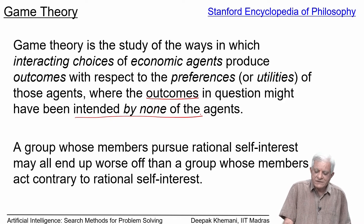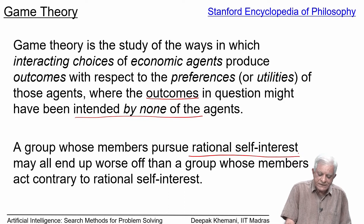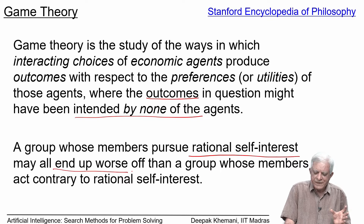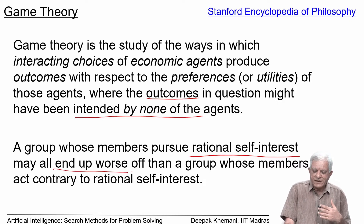A group whose members pursue rational self-interest — and we keep emphasizing that agents have rational self-interest, they have self-interest and they are perfect reasoners — may all end up worse than a group whose members act contrary to rational self-interest. It can be seen in many situations that the outcome of many games is worse than what could have been if there was cooperation. When we say rational self-interest, we basically mean lack of cooperation, lack of collaboration between people, where each is acting independently to do their own thing.